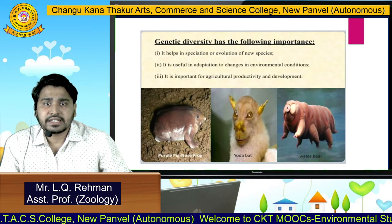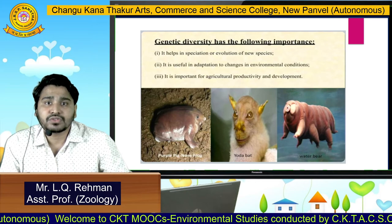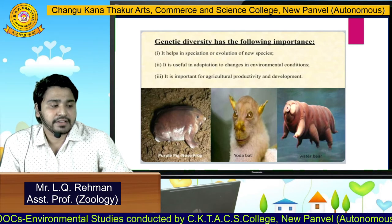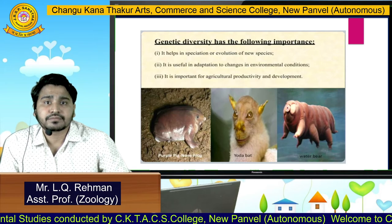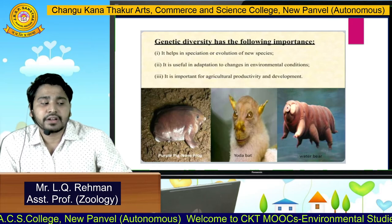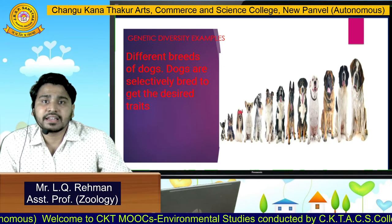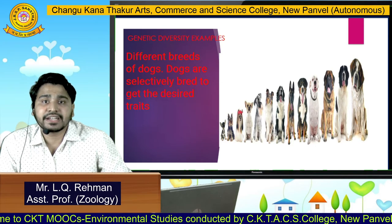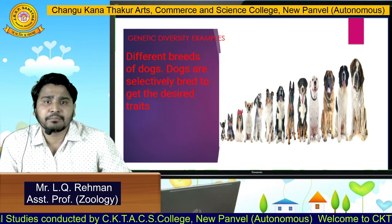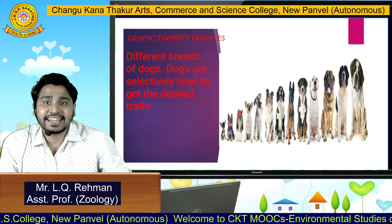Genetic diversity has various importance. It helps in speciation or evolution of new species. In this diagram, you can clearly see there are different species due to evolution. It is also useful in adaptation to changes in environmental conditions, and it is important for agricultural product development. In this example, you can clearly see the genetic diversity that different breeds of dogs have. Dogs are selectively bred to get the desired traits, and there are many breeds of dogs present on the earth — this is nothing but genetic diversity between them.